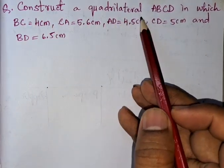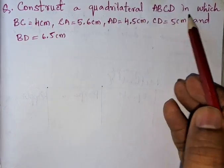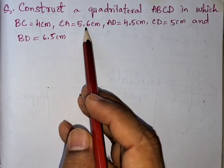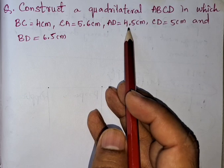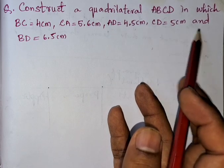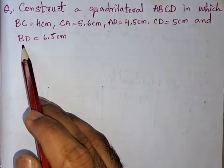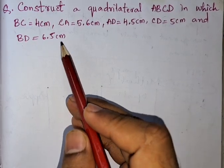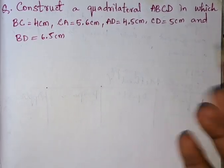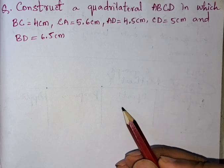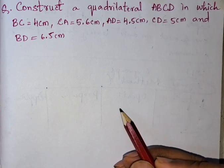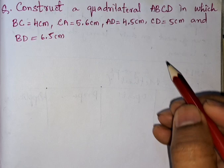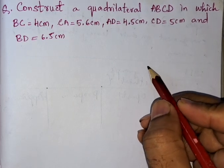Construct a quadrilateral ABCD in which BC equals 4 centimeters, CA equals 5.6 centimeters, AD equals 4.5 centimeters, CD equals 5 centimeters, and BD equals 6.5 centimeters. They have given the measurements of the sides as well as diagonals. First we will draw the rough diagram, as you know you will get one or half marks for that.